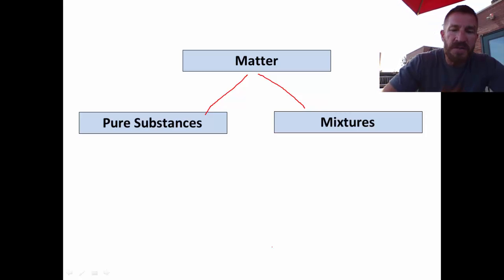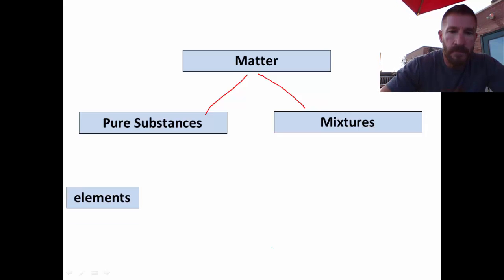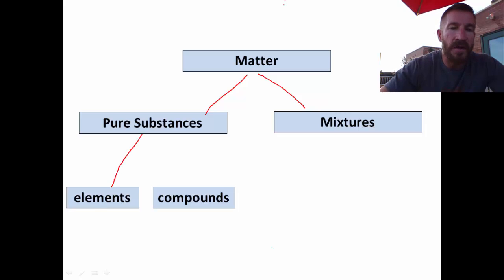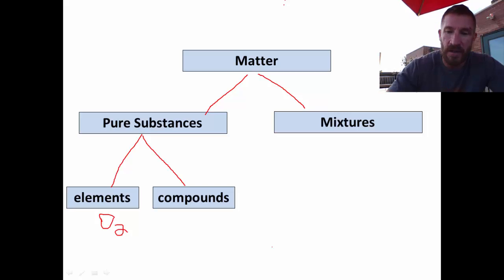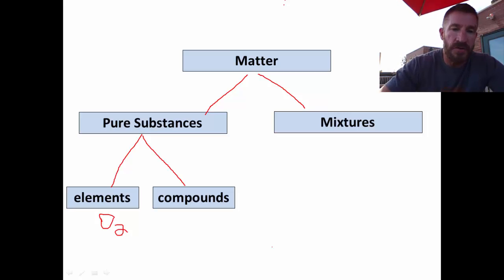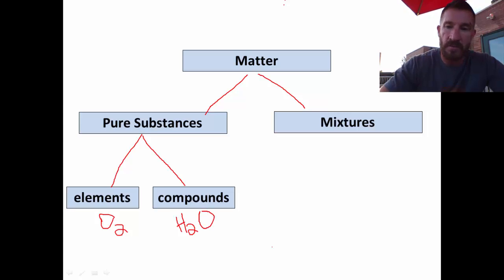Pure substances split further into elements and compounds. Elements have only one type of substance — for example, oxygen, O2, which we breathe, is an element; it's diatomic. Compounds, however, have two or more elements. So anytime you have two different elements together, that would be a compound. For example, water is an easy example of a compound.